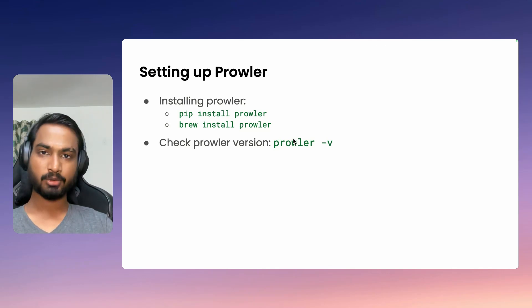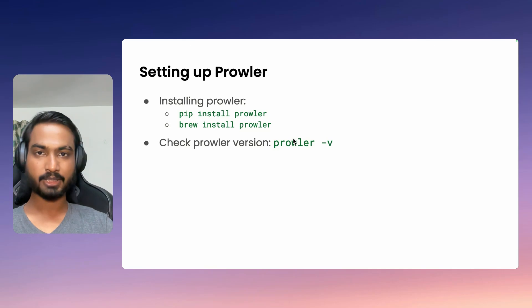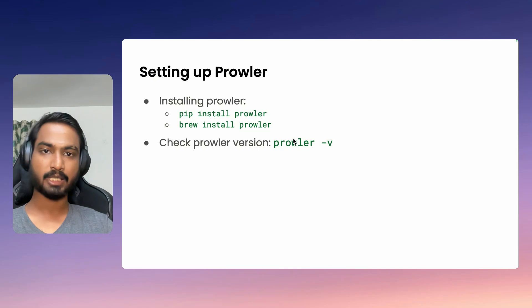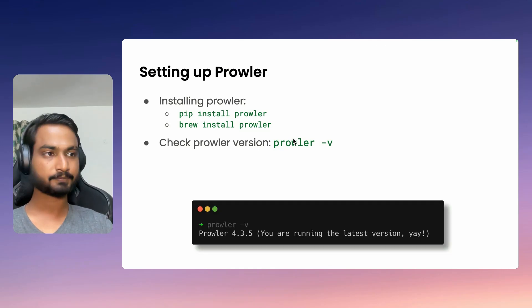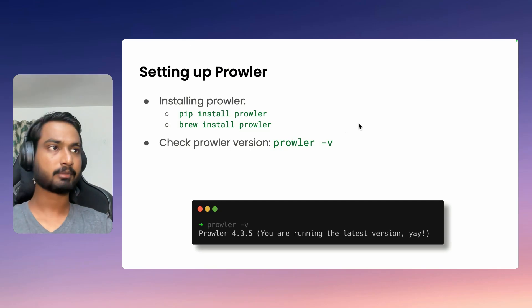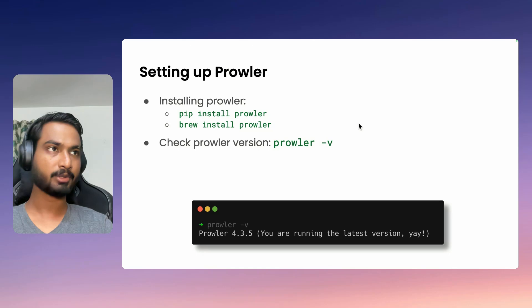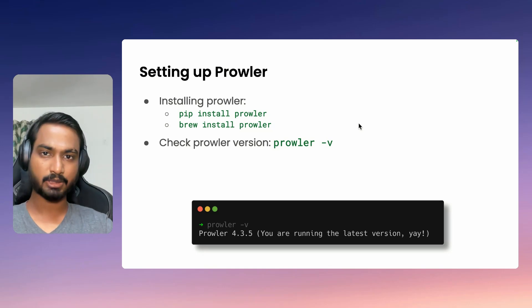To check if Prowler is correctly installed, you can just execute the command Prowler -v, which should print out the version. So let's quickly go ahead and try to install Prowler. I'm on a Mac, so I'd be using brew instead. If you are on Windows or Linux, just use pip.